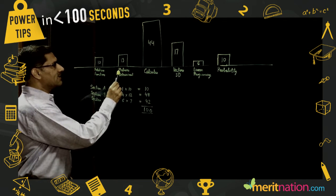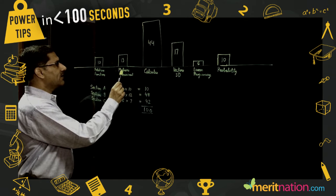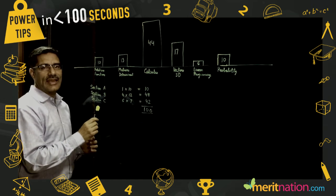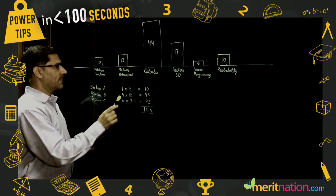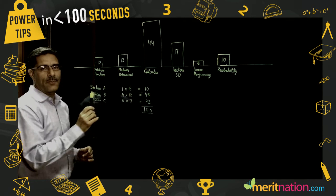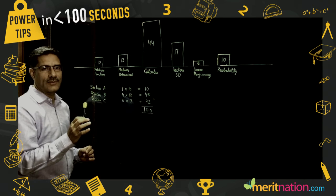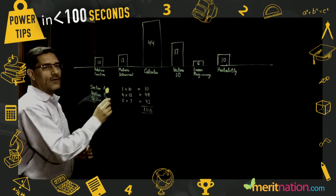In matrices: elementary row transformations and elementary column transformations to find the inverse of a matrix, determinants, properties of determinants, solution of a system of linear equations using inverse of a matrix.